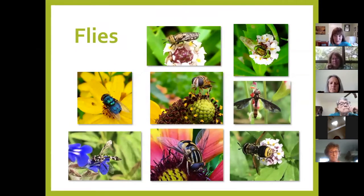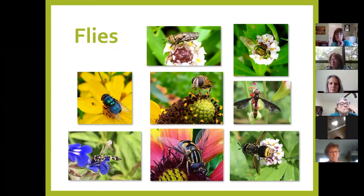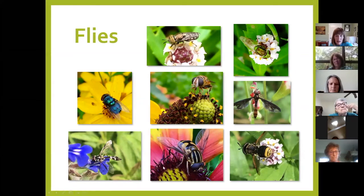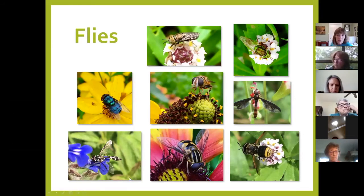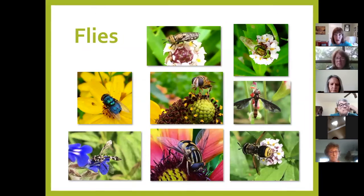Flies are actually pretty good pollinators as well. They don't tend to be fuzzy like bees, but they're low to the ground and small. Instead of a tongue or proboscis, they have a little spongy, shallow, flat mouthpart, so they have to get very much into the nectar reward in order to feed. Some flies — like hover flies or syrphid flies — have larvae that are predaceous. A single hover fly larva, depending on species, can eat two to four hundred aphids before it pupates, so it's extra bang for the buck.